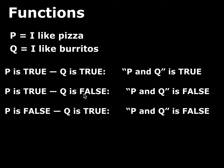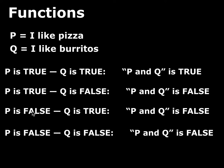Notice it's also false if I like burritos but I don't like pizza. And finally, suppose I don't like either pizza or burritos — then the conjunction 'I like pizza and I like burritos' would also be false.